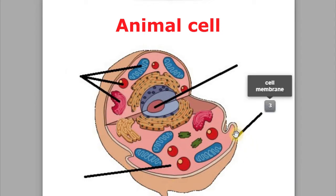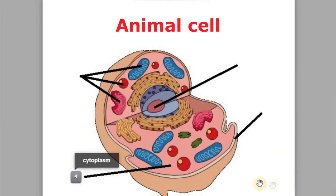Then we have the cell membrane, which surrounds and protects the cell. And we also have the cytoplasm, which is a thick clear liquid where all the organelles float in.